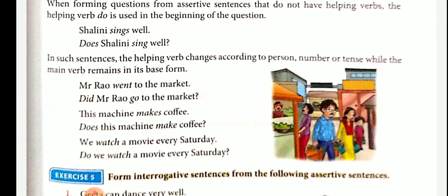Now form interrogative sentences from the following assertive sentences. A couple of examples: Geeta can dance very well — Can Geeta dance very well? They have won the match — Have they won the match? This is a good book — Is this a good book? The remaining exercises you have to do yourself.